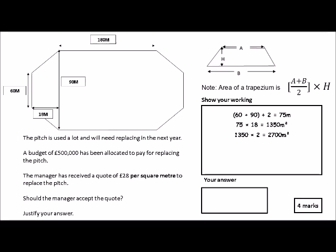And then you times that by 2 because there's a trapezium on both ends of the pitch, as you can see. So 1,350 times 2 is 2,700 meters squared. So that's just going to get you one point.